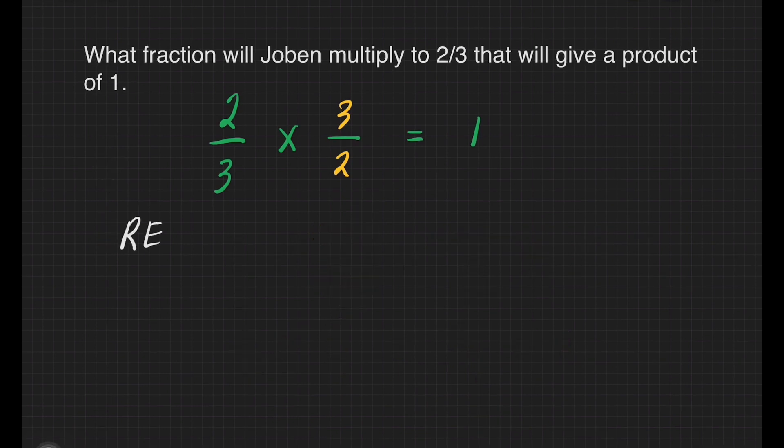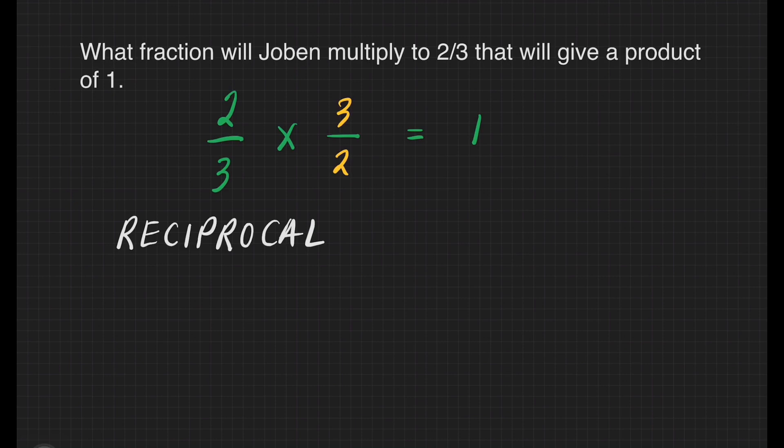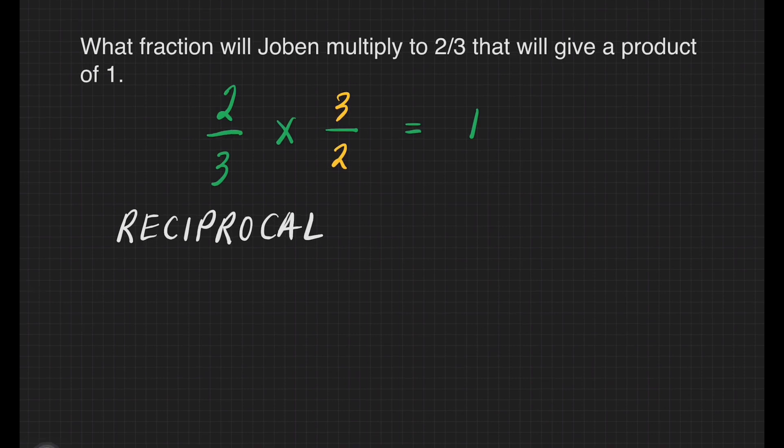We may call 2/3 and 3/2 as reciprocal numbers. When the product of 2 fractions is equal to 1, each fraction is called a reciprocal of the other. The reciprocal of a fraction is a fraction obtained by switching the values in the numerator and the denominator of the given fraction. If you notice, the numerator here becomes the denominator and the denominator here becomes the numerator. So that's the trick there.